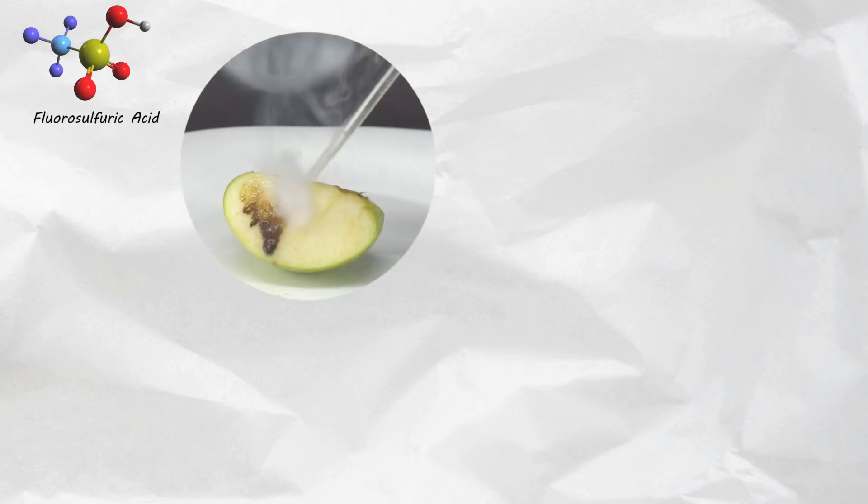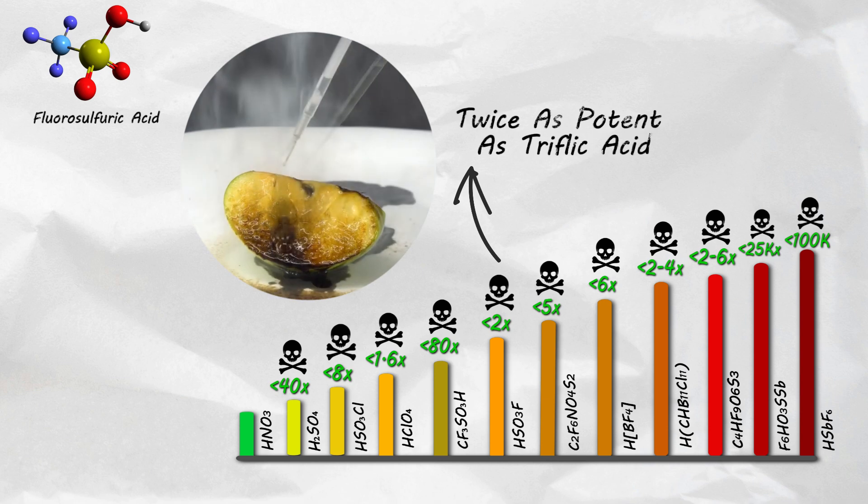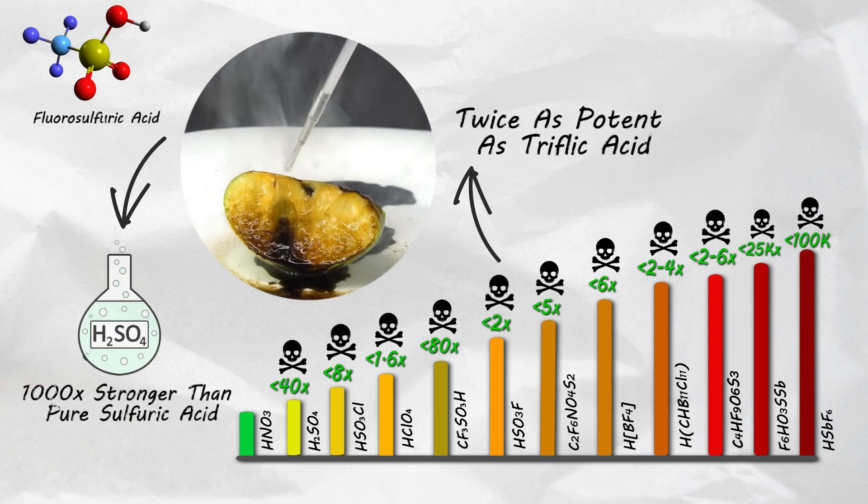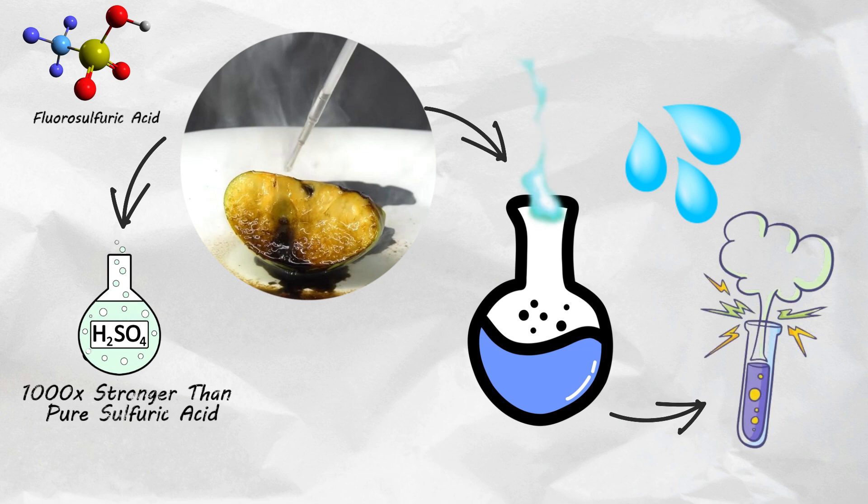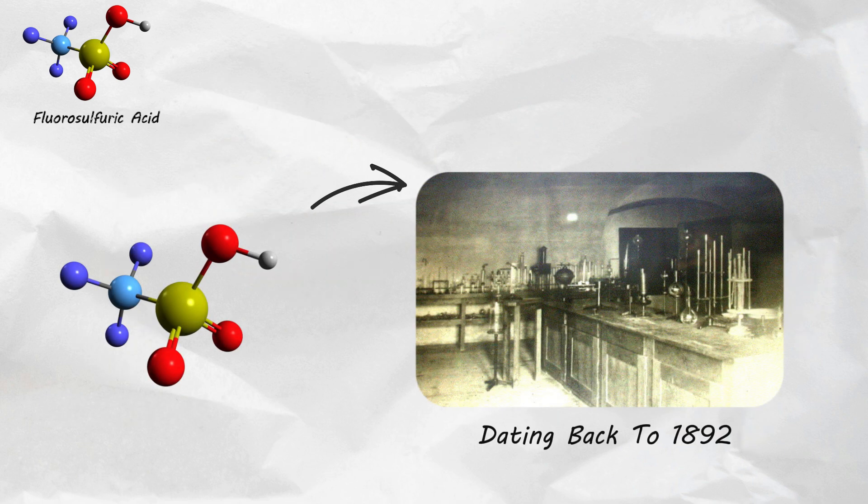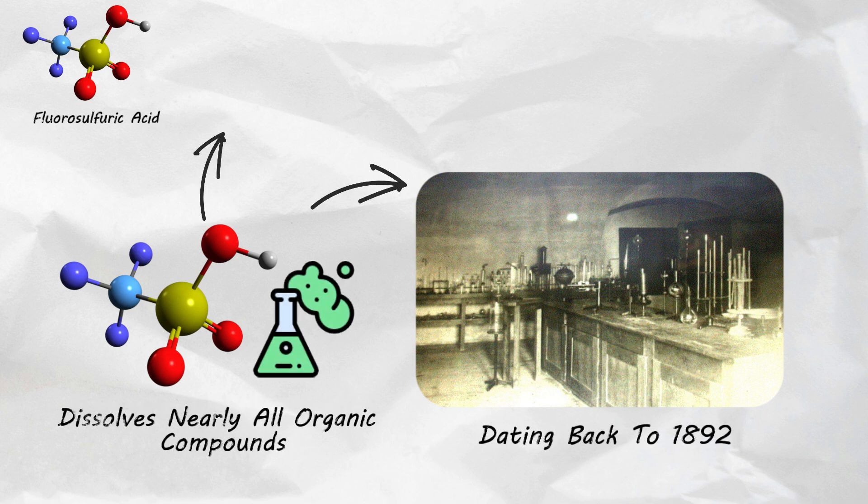Fluorosulfuric acid is one of the strongest acids commercially available and about twice as potent as triflic acid and a thousand times stronger than pure sulfuric acid. This transparent liquid fumes vigorously when in contact with water. It is highly reactive. Dating back to 1892, its discovery birthed a substance with unparalleled acidity, capable of dissolving nearly all organic compounds.